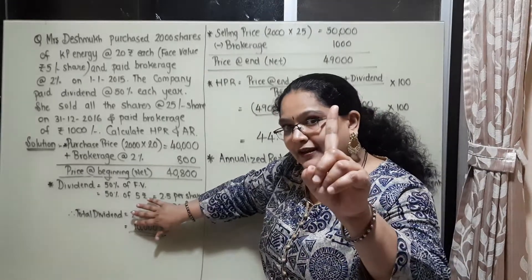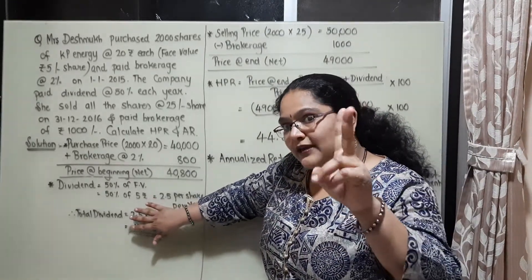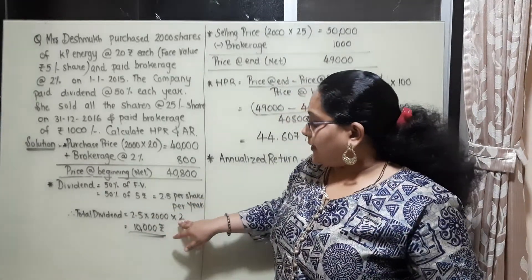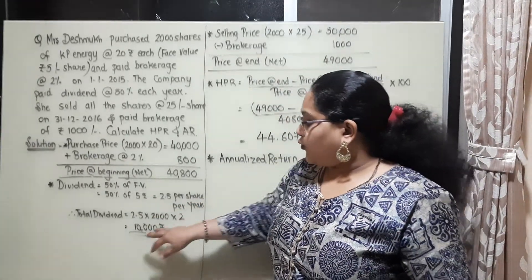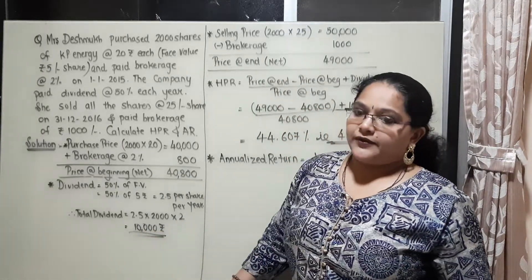That 5000 rupees is one year's dividend. She had a holding of 2 years, so multiplying by 2 gives 10,000 rupees total dividend received.